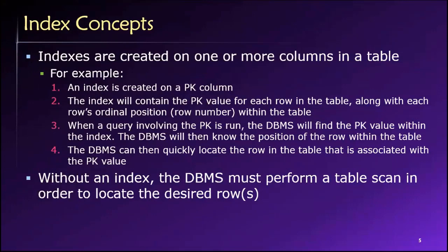Indexes are created on one or more columns, and it is extraordinarily common for indexes to be applied to primary keys. The reason why is: how do we join records together in different tables? It's through primary key-foreign key links. So in order to match up a record in one table with a record in another table, if the primary key column is indexed, I will be able to quickly locate any of the records in that table by the primary key value — which is exactly what I need for linking records together.